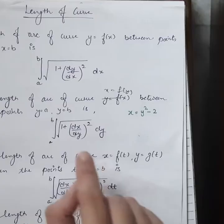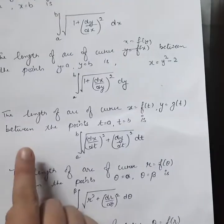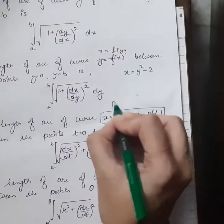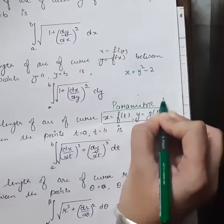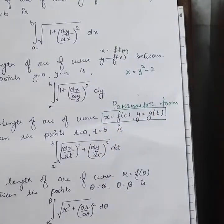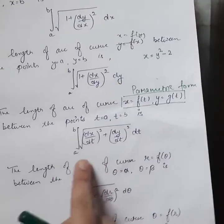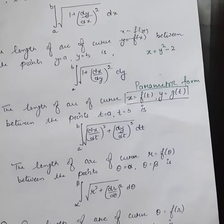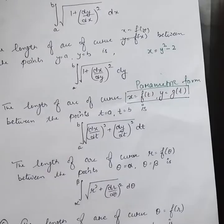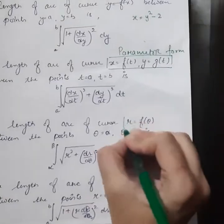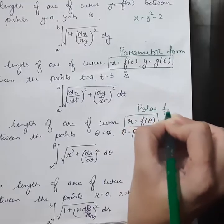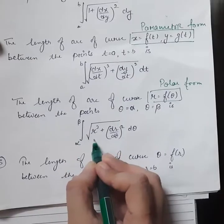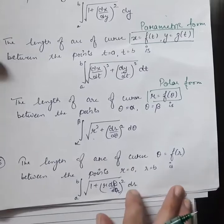The third form: if the equation is given in parametric form, defined as x equals f(t) and y equals g(t), then the length of curve is calculated using the formula: integral of the square root of (dx/dt)² plus (dy/dt)², between limits a to b. Similarly, if the equation is given in polar form r equals f(θ), then the length of curve is given by the integral from α to β of the square root of r² plus (dr/dθ)².